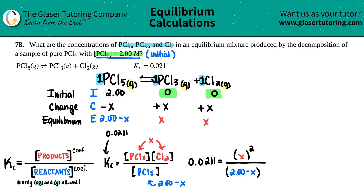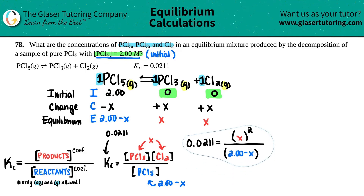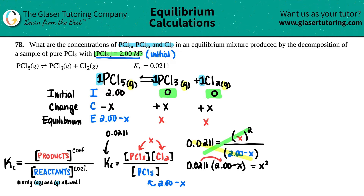To set up the quadratic, cross-multiply: 0.0211 × (2.00 − x) = x². Distributing: 0.0211 × 2.00 = 0.0422, and 0.0211 × (−x) = −0.0211x. So we have 0.0422 − 0.0211x = x².